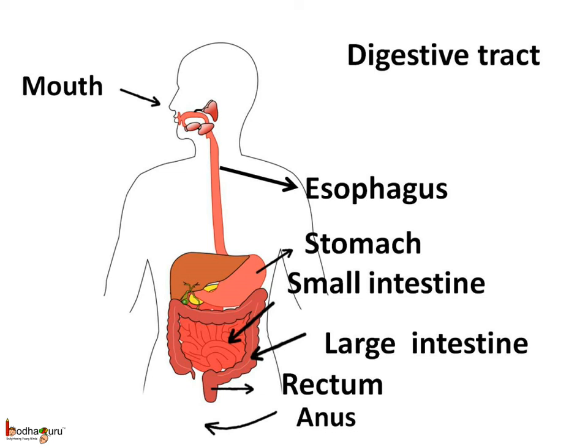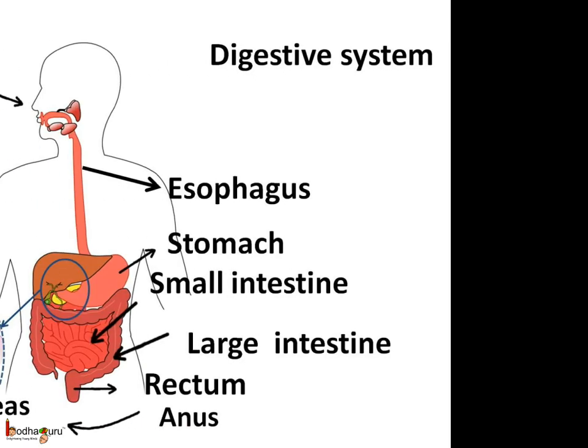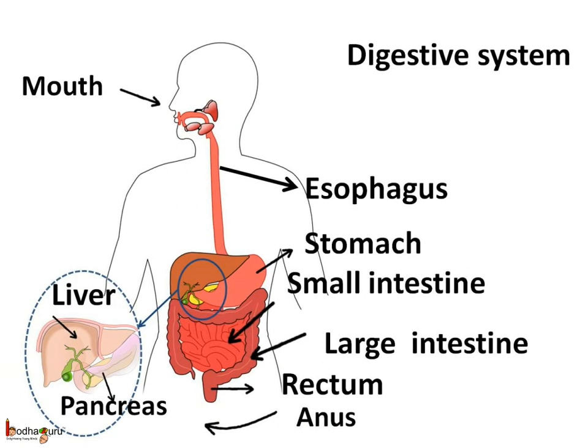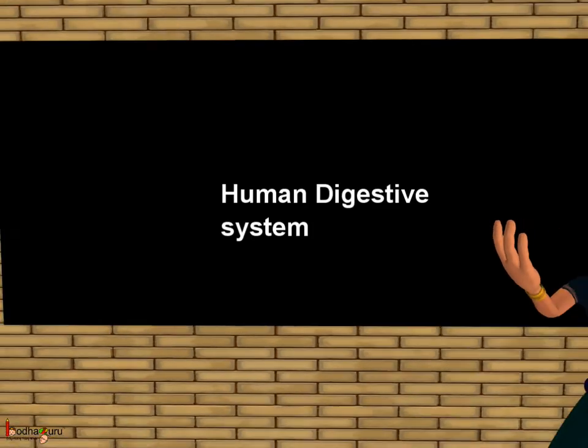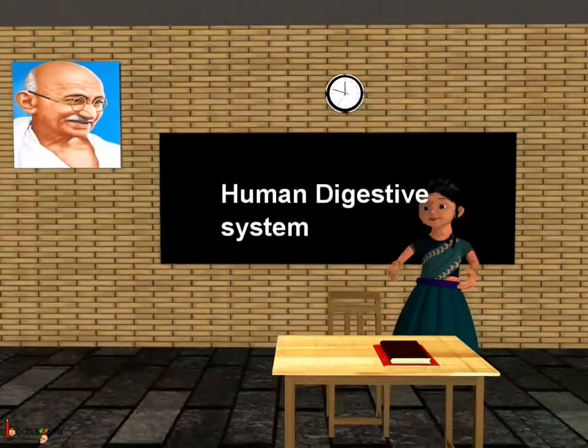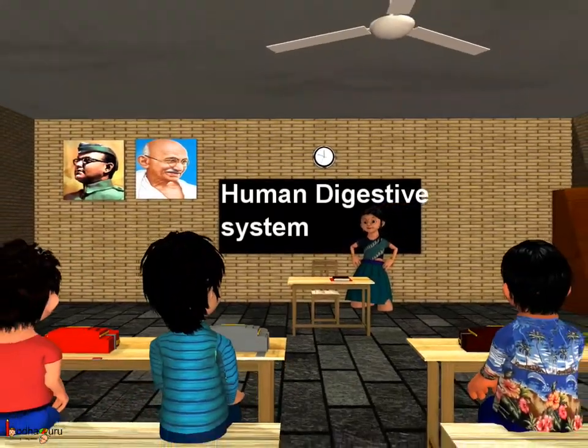Now you know which organs form the digestive tract or the alimentary canal: the mouth, esophagus, stomach, small intestine, large intestine along with the rectum, and the anus. The digestive tract and associated glands — the liver and the pancreas — together constitute the digestive system. Now you know what the digestive system in the human is. That is all for now. Bye-bye children.